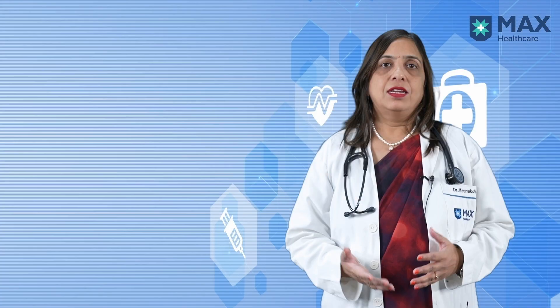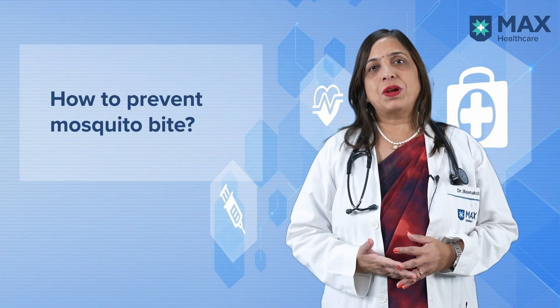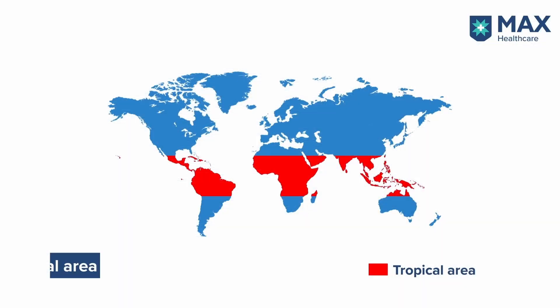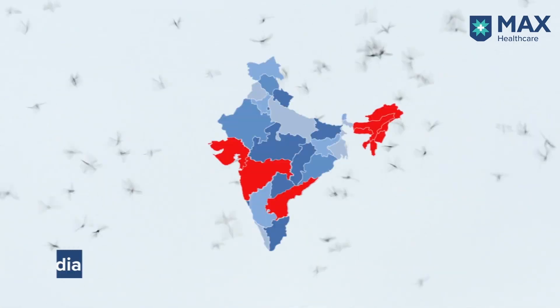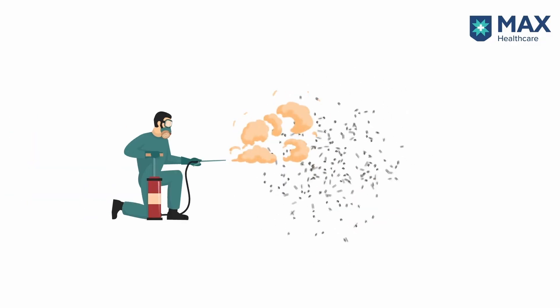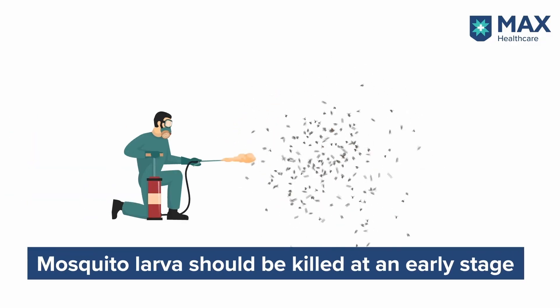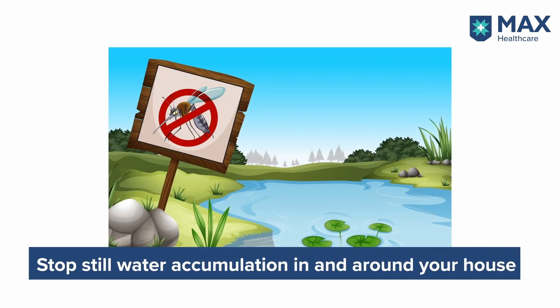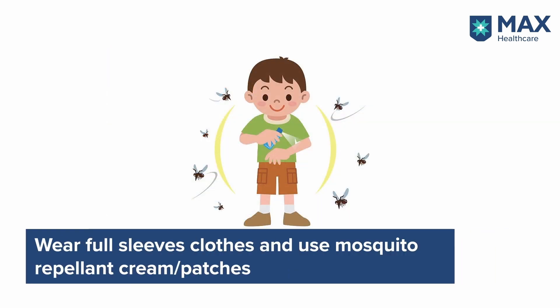The prevention of malaria is very simple — prevent mosquito bites. The most important thing is that the mosquito should not be allowed to breed, so killing larvae at their early stages is one measure. Not allowing water to get collected is another. And preventing our body by wearing mosquito repellent patches or using full sleeve clothes are important to prevent mosquito bites.